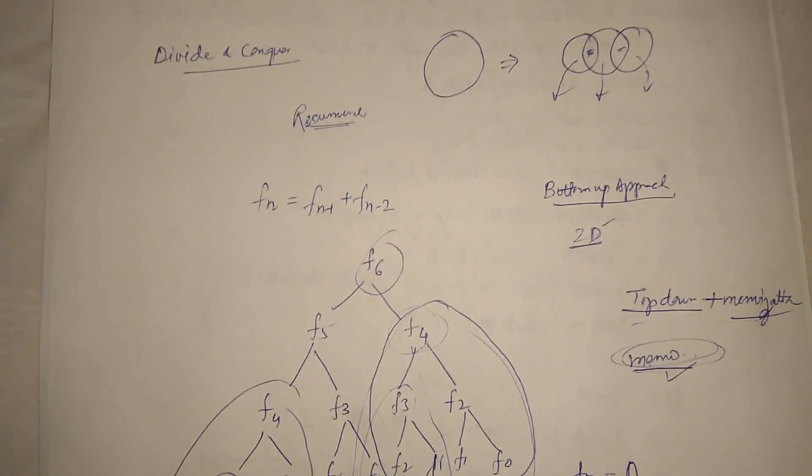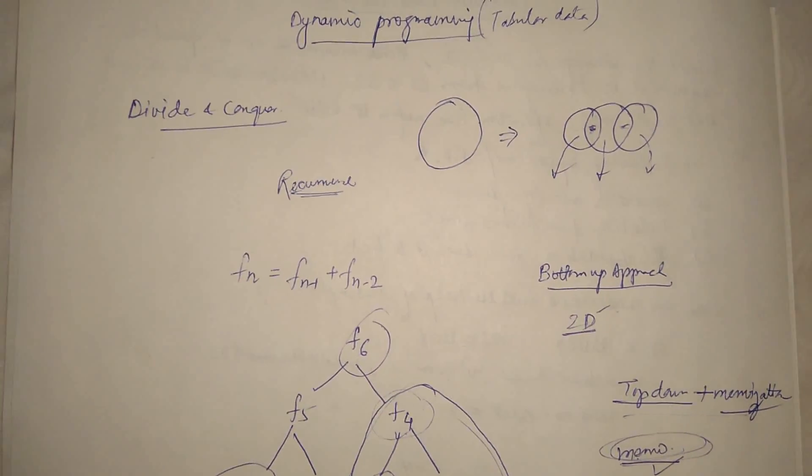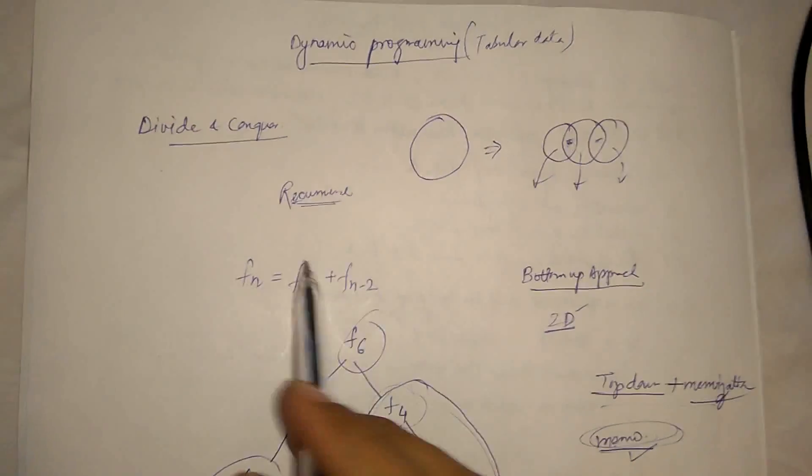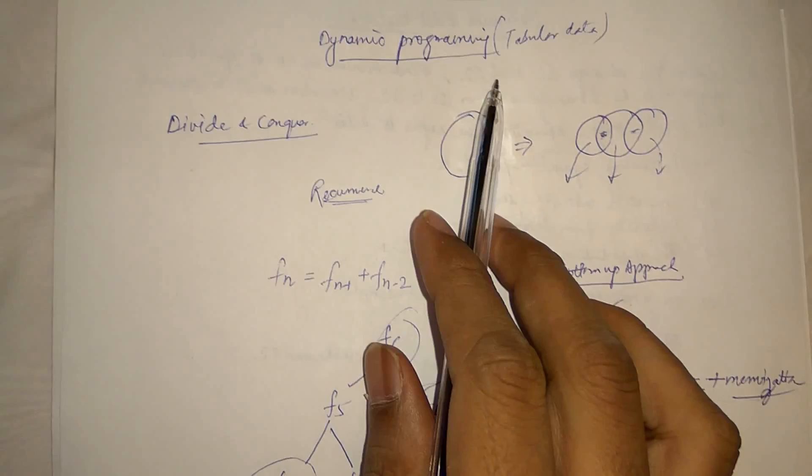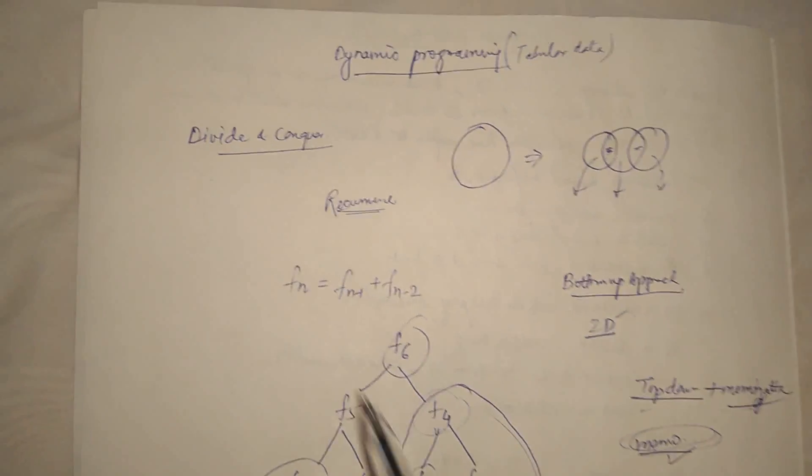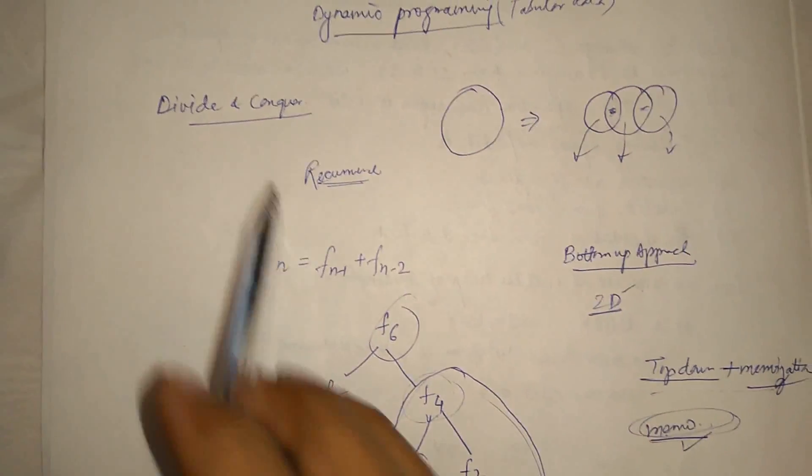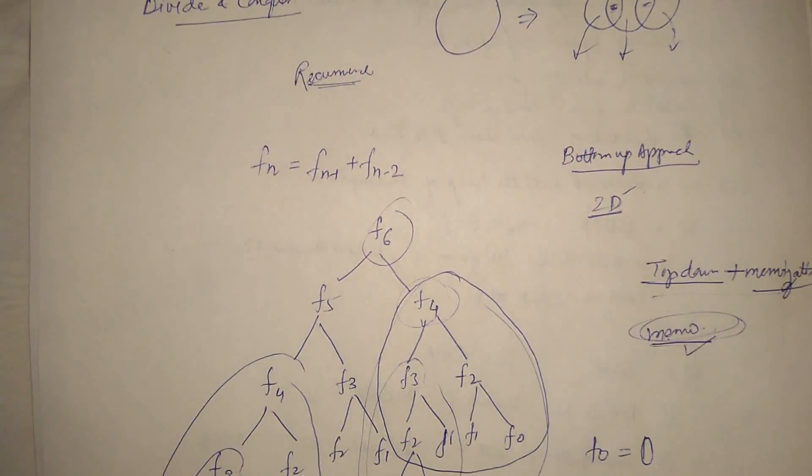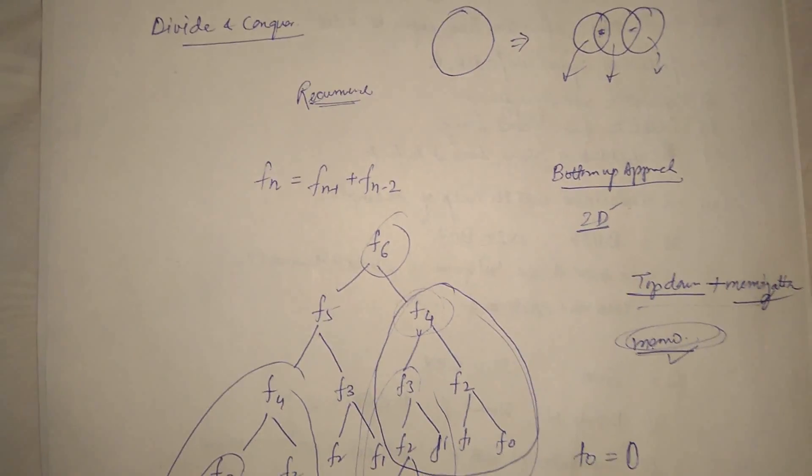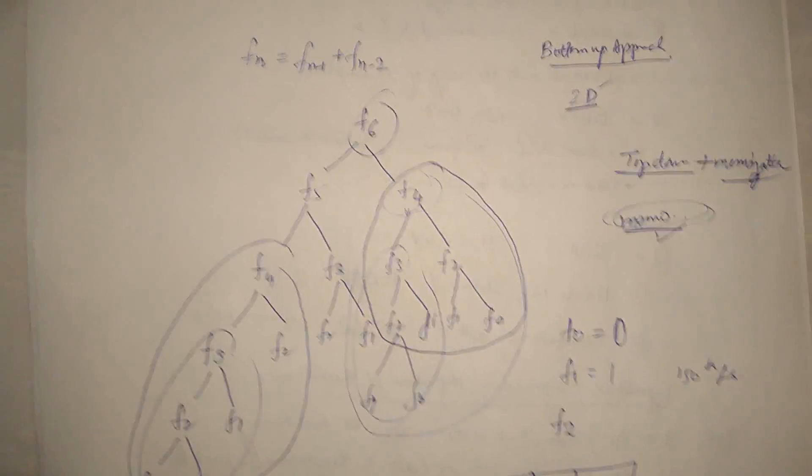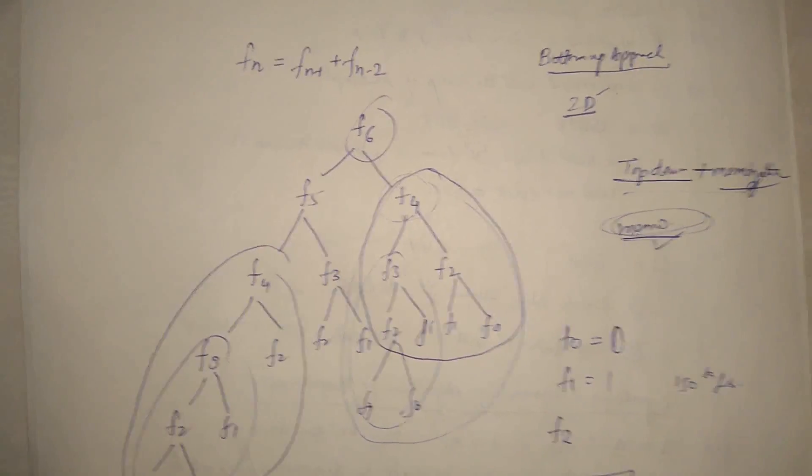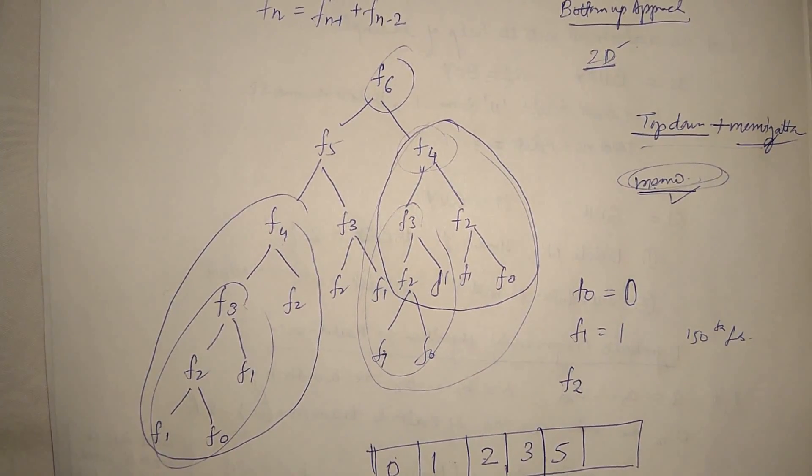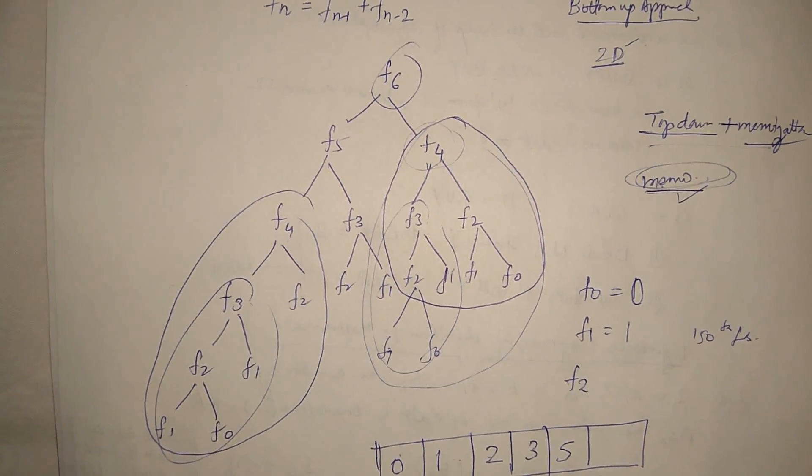So what is the general time complexity for problems which is solved using dynamic programming? This will become polynomial timing. And while in naive approach like purely divide and conquer, it will be somehow exponential. Not somehow. It is exponential basically.